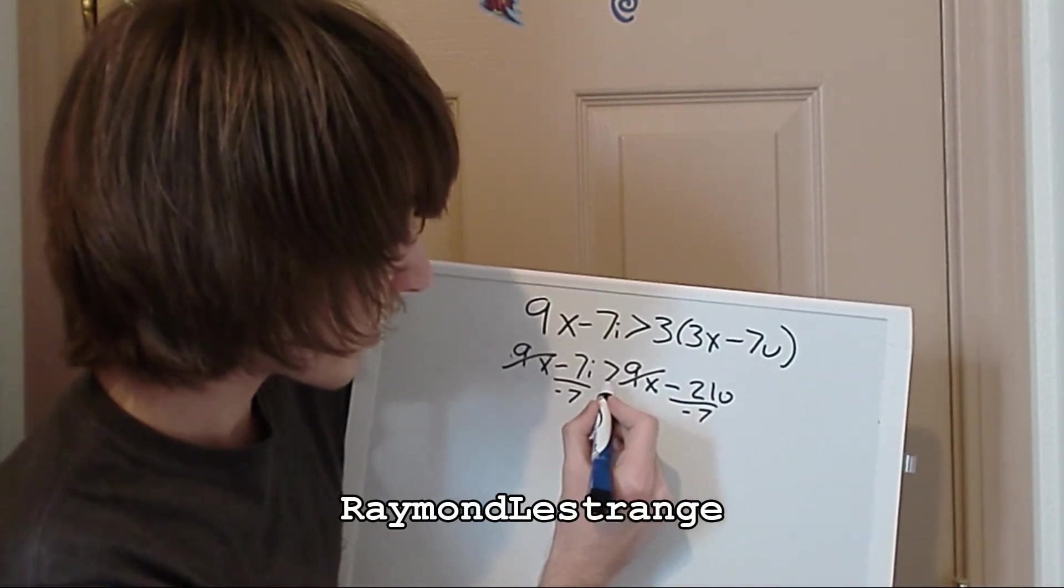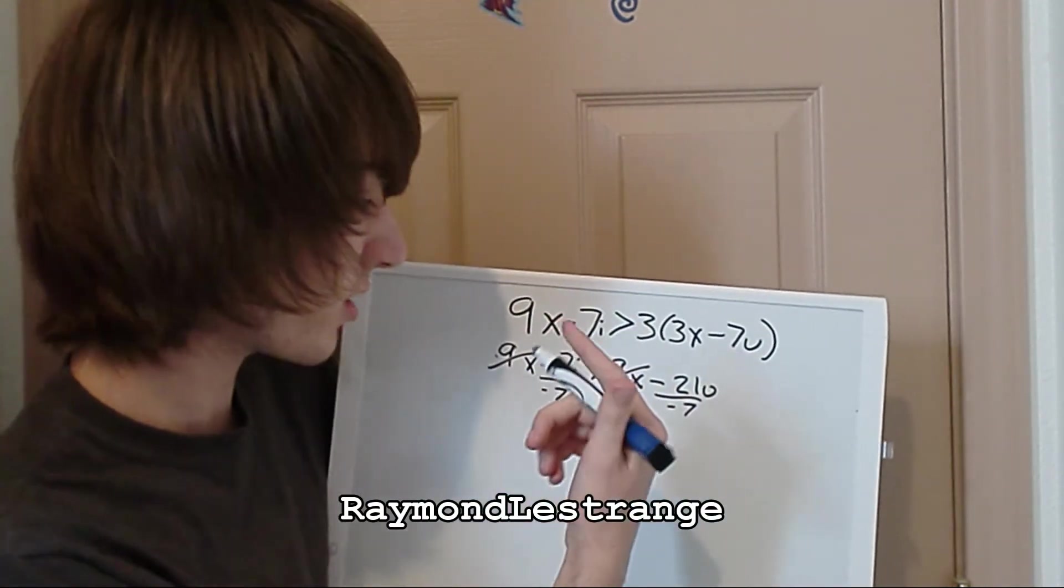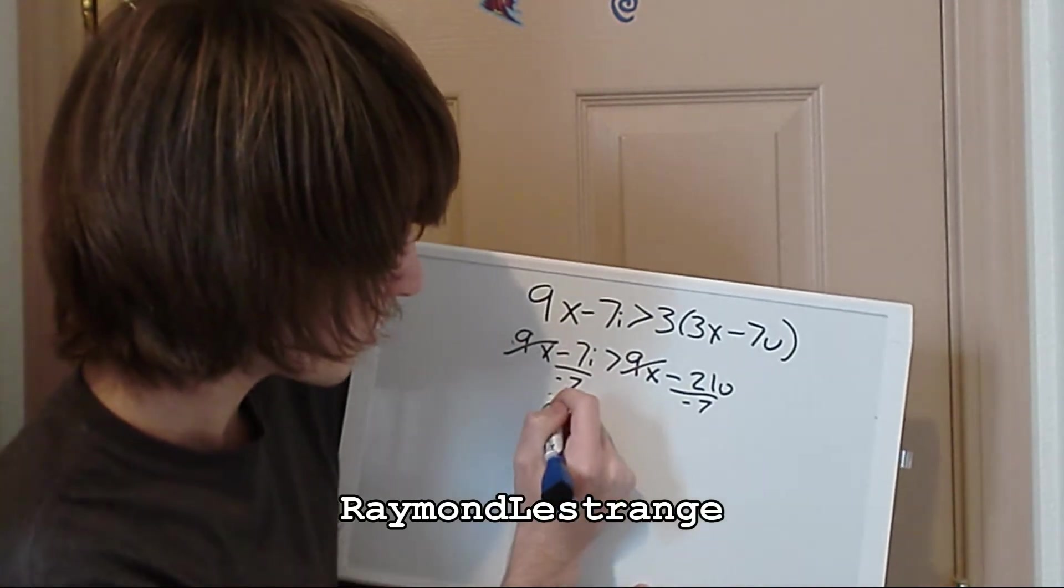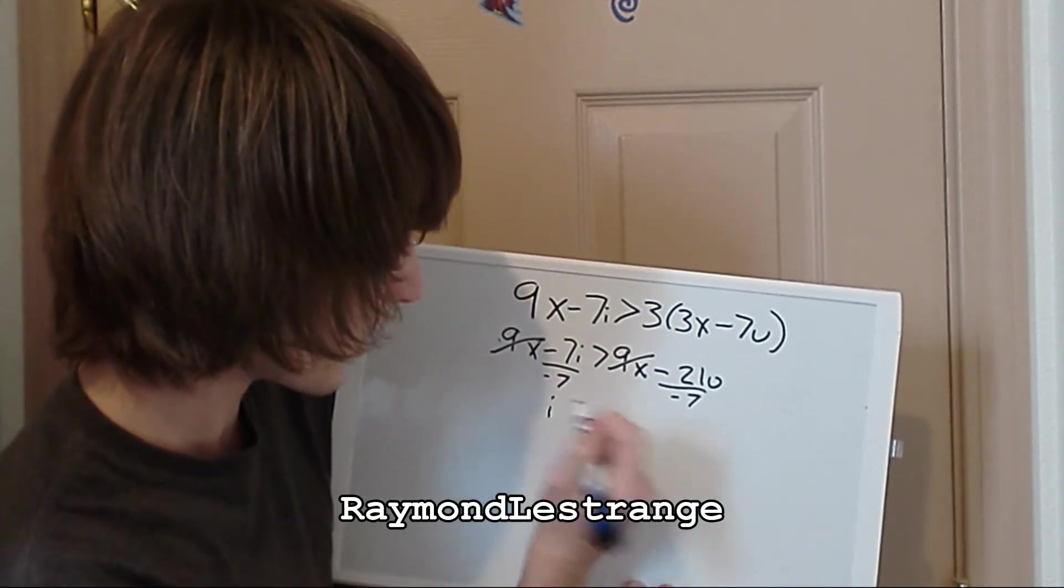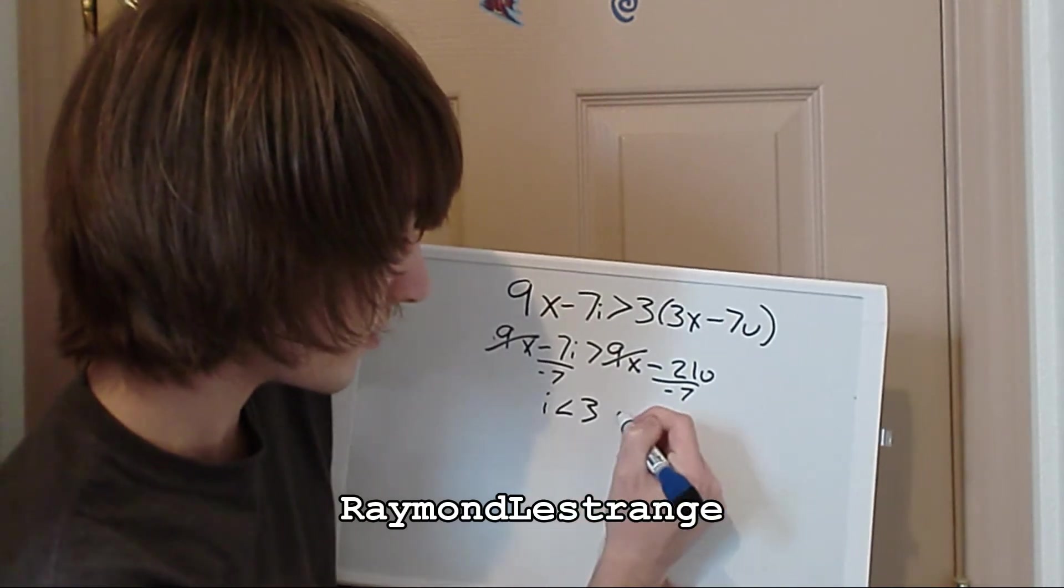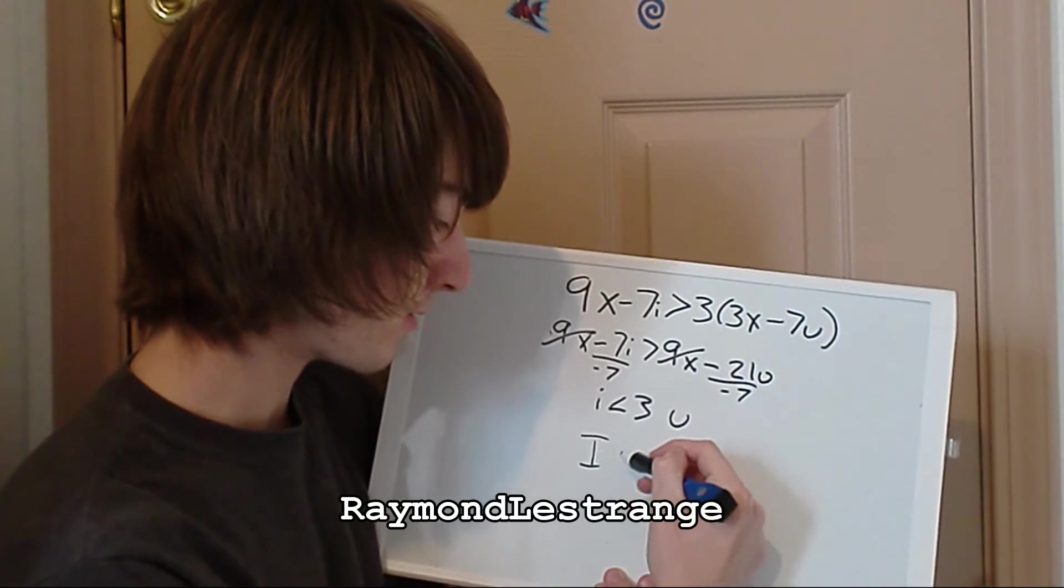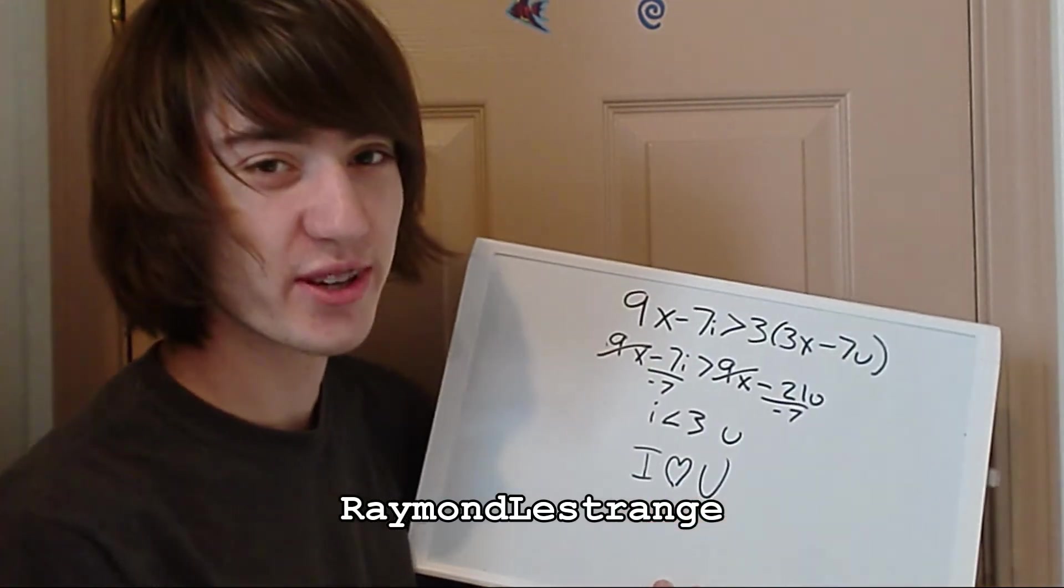So now when we divide by a negative sign, we have to flip the greater than sign. So it becomes I is less than 3u. Which of course looks like I heart you. I love you.